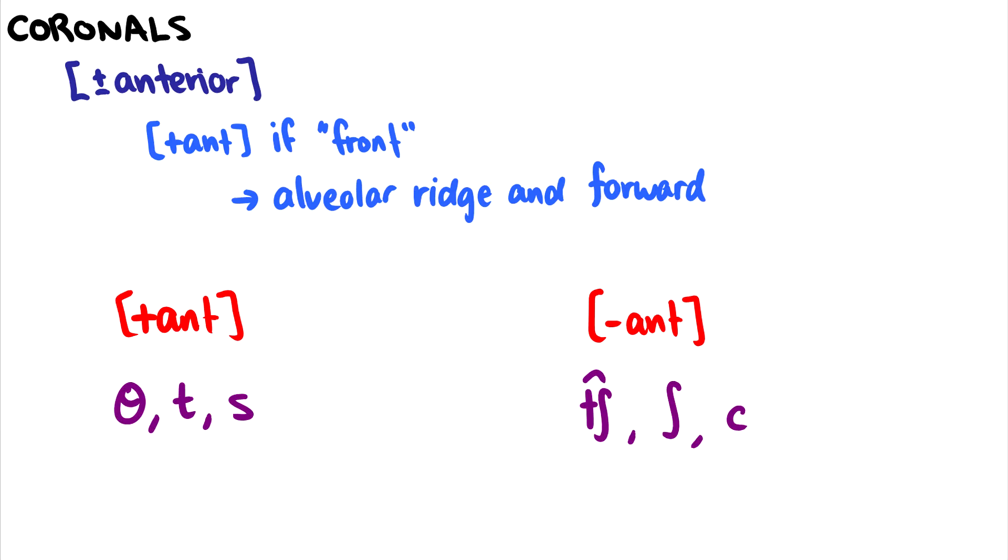So here we have a dental sound, then we have our alveolar sounds. Minus anterior sounds would be something like the alveopalatal ch or sh, or even the sound further back in the palate. So this would be the palatal stop ch. So that is a minus anterior sound. So anterior distinguishes between alveolar ridge and dental with the alveopalatal and palatal sounds.